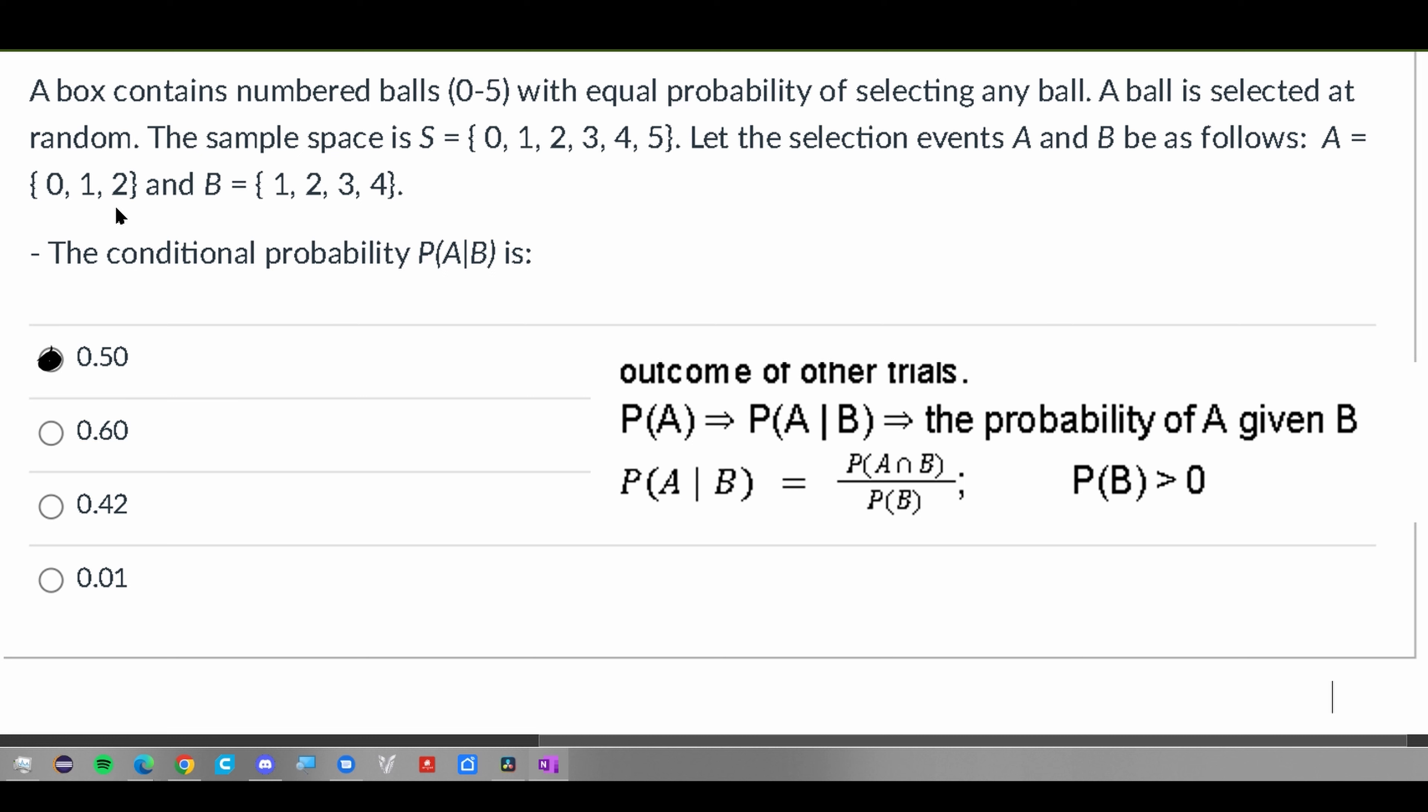A box contains numbered balls 0 to 5, 6 in total, with equal probability of being selected. A ball is selected at random. The sample space is S, and we have the following selection events A and B.